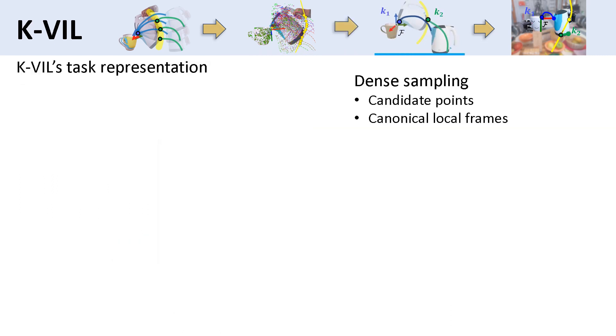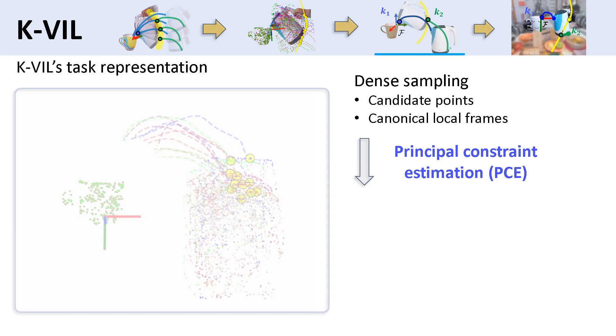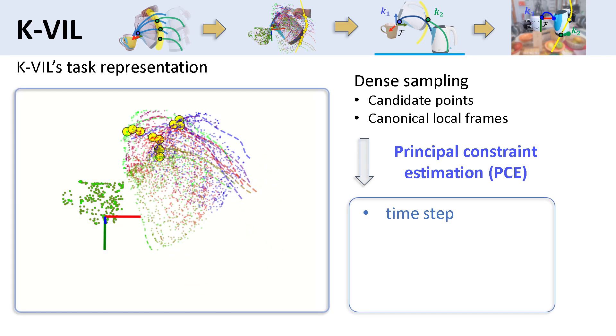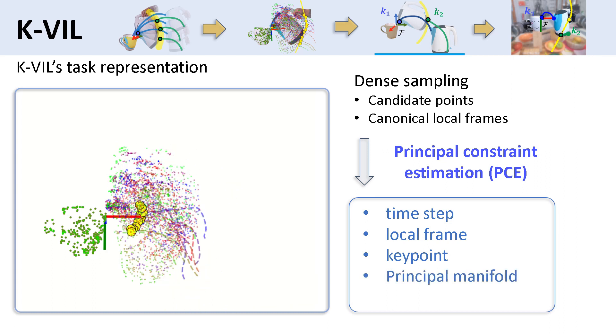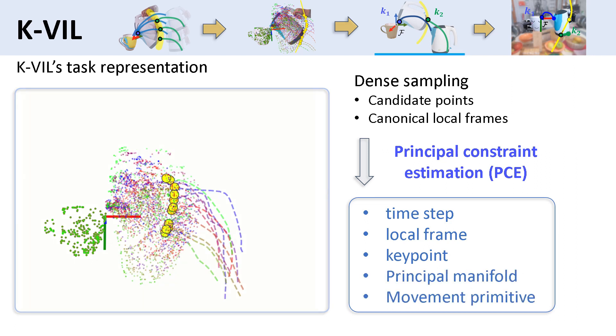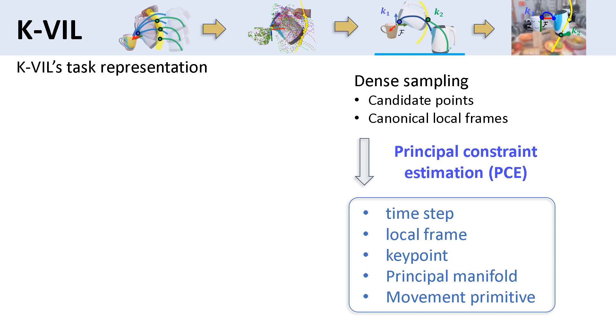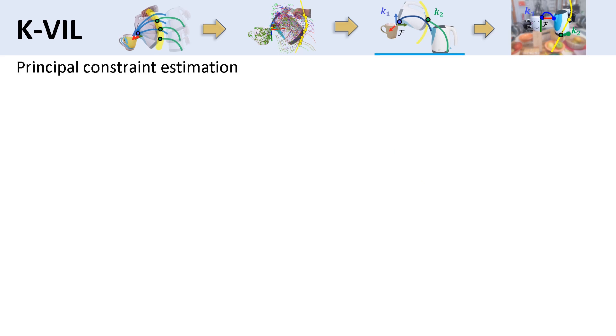We align the candidate local frames to create a common viewpoint and learn KIVOS task representations using PCE. It jointly extracts the time steps, the local frames, the keypoints, their geometric constraints and motion primitives. In 3D space, a geometric constraint can be a point, a line, a plane, a curve, or a surface, which can be modeled as principal manifolds.